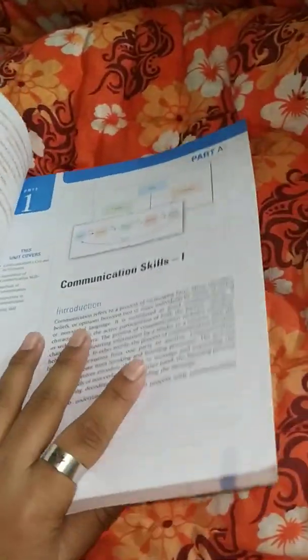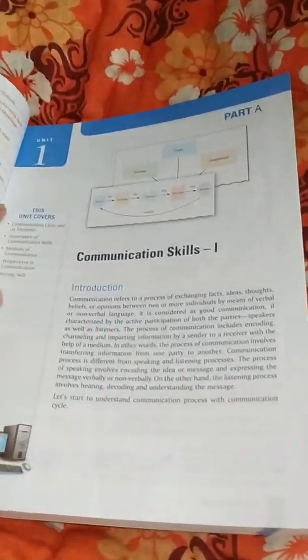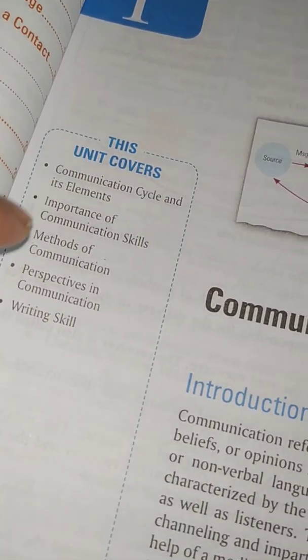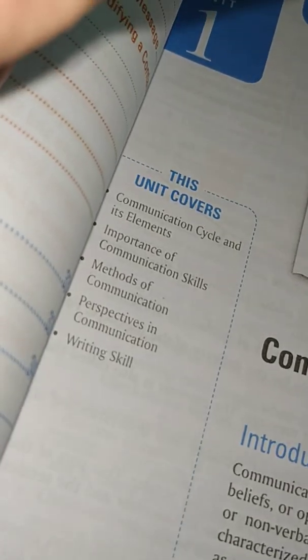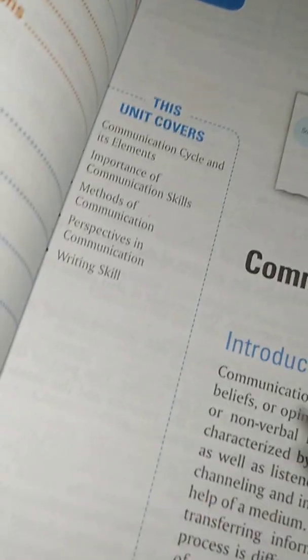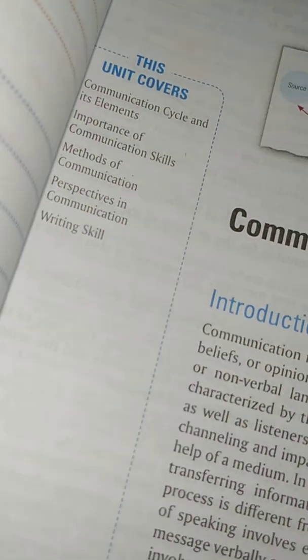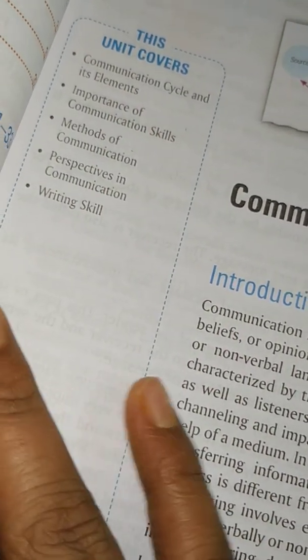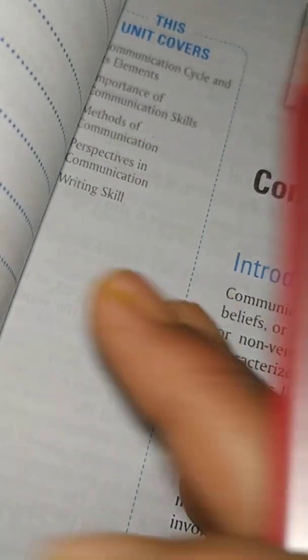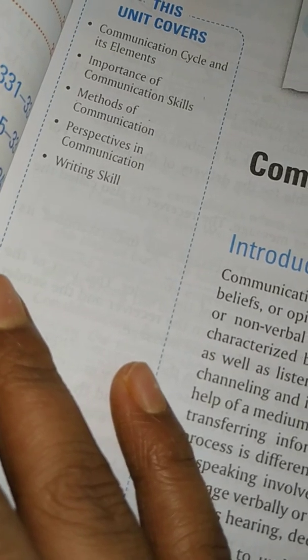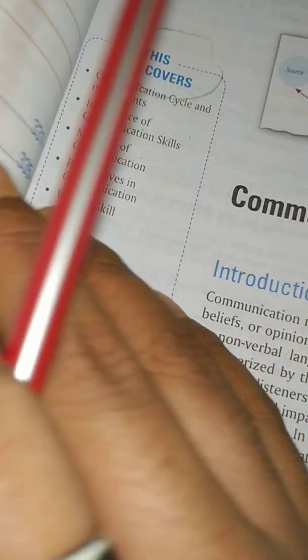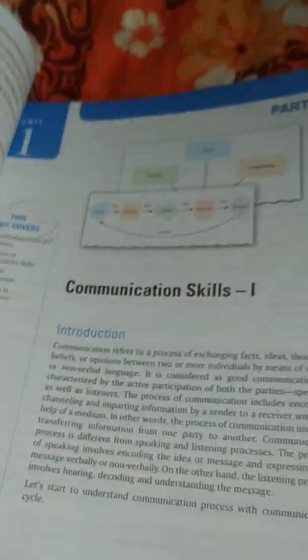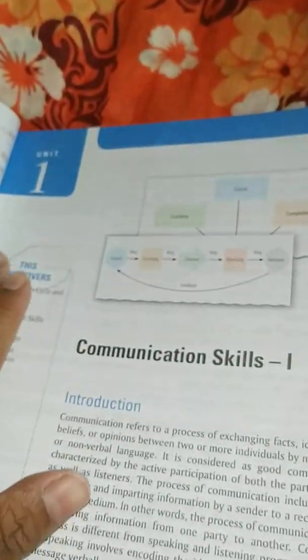The first chapter of the book is Communication Skills. In this section, the book covers the communication cycle and its elements, importance of communication skills, methods of communication, perspectives in communication, and writing skills.